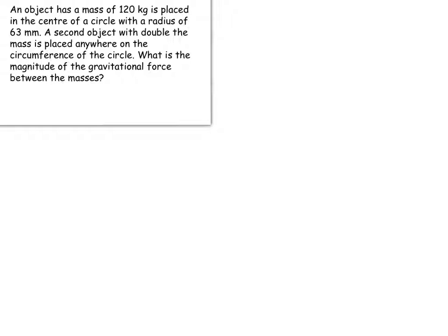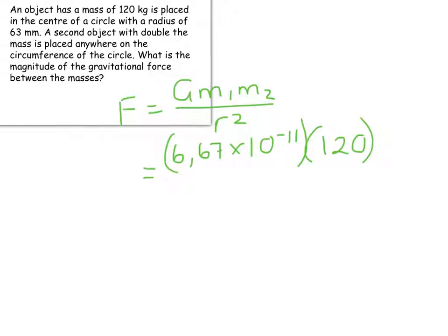So, this is a simple application of saying F is equal to G M1 M2 over R squared. A couple of things to think about. Make sure you go and get the right G value off your information sheet, and then you must make sure that when they've given you masses that they are in kilograms. In this case, they were in kilograms.